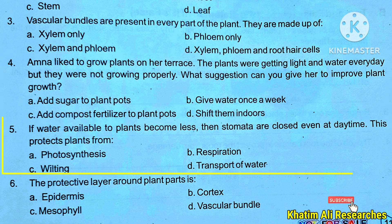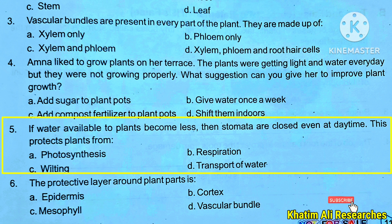Question 5: If water available to plants becomes less, then stomata are closed even at daytime. You can see the stomata or pores and observe plant transpiration. Options: A. Photosynthesis, B. Respiration, C. Wilting, D. Transport of water.